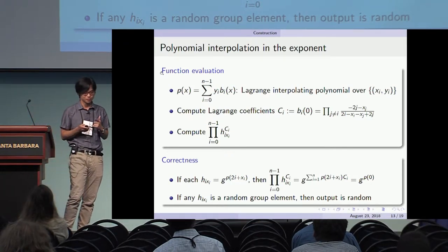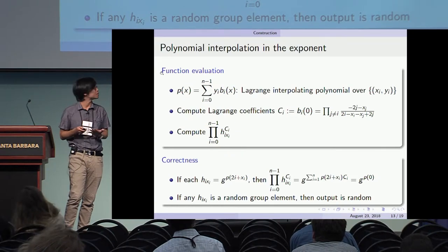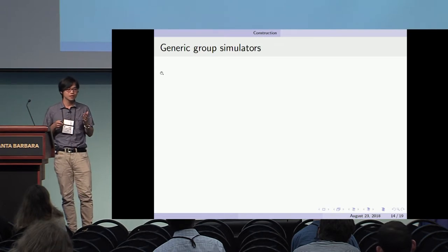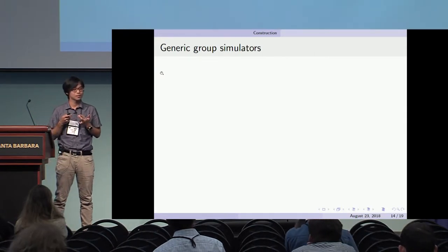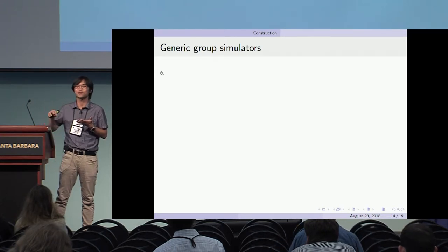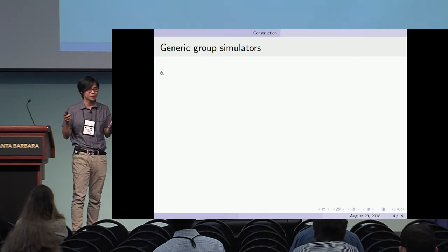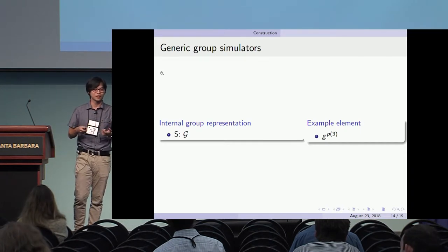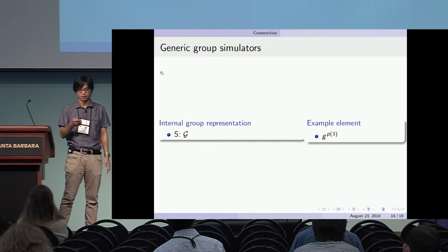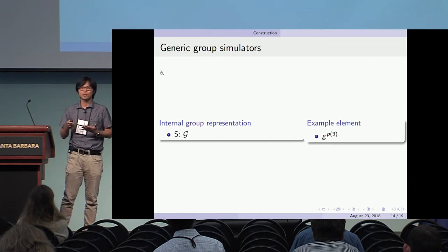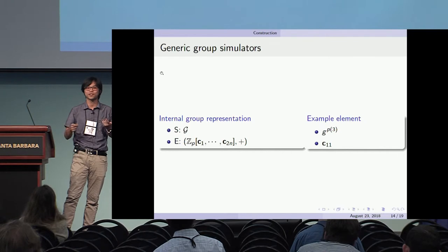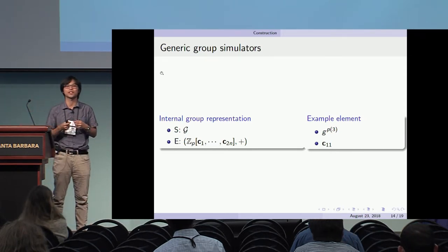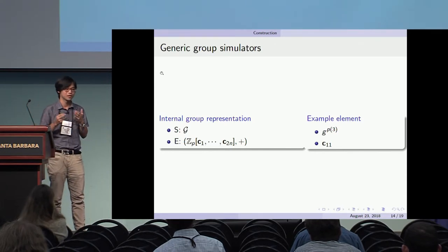The correctness of this scheme is straightforward. For security, we use a game between generic group simulators. The proof is a hybrid over the internal group representations of each oracle. The first hybrid is the actual implementation — a cyclic group of order p, where group elements are g to the power of some polynomial. The final hybrid represents the zero function, using a free group over two-n basis elements. Any linear combination there is never zero because all elements are independent, so any adversary trying to construct an interpolation will always get something non-zero — this represents the zero function.